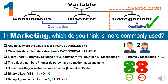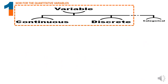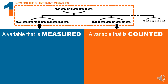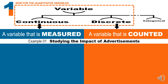Another example would be binary, where a yes could get 1 and no could get 0, or in agreements a true could get 1 and a false could get 0. This type of variable is called a qualitative categorical variable. Now we come to the quantitative variables. What is the key difference between a continuous and a discrete variable? Let us assume I am doing a study on the impact of advertisements, and one of the variables would be the duration of the ad and another would be the frequency of the ad.